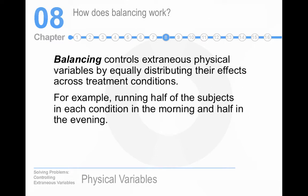Balancing controls extraneous variables by distributing them equally across your treatment conditions. If you're running research in two rooms, don't run the experimental group in one room and the control group in the other, because you're systematically linking changes in the independent variable with location — that's a confound. Balancing would say run half your experimental group in one room and half in the other, and half your control group in one room and half in the other.